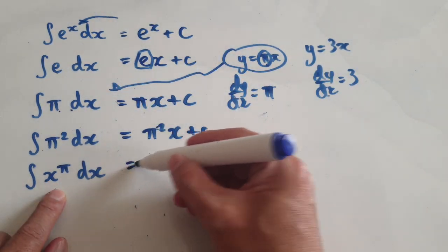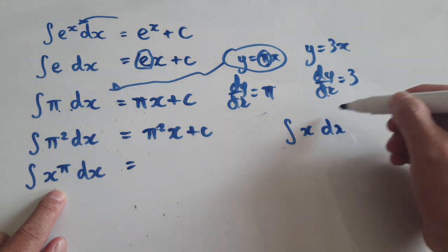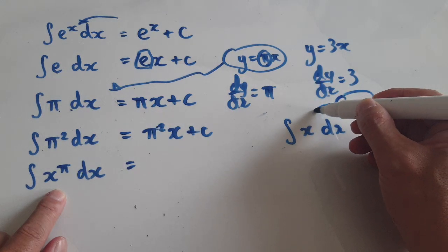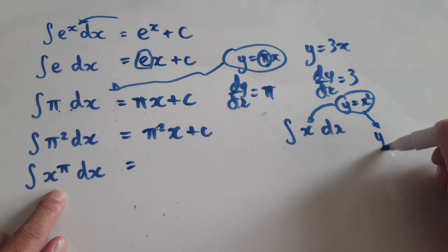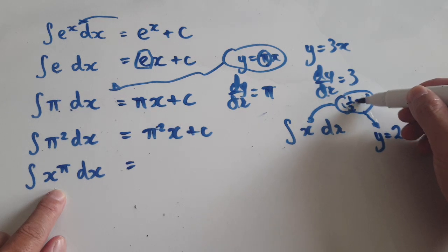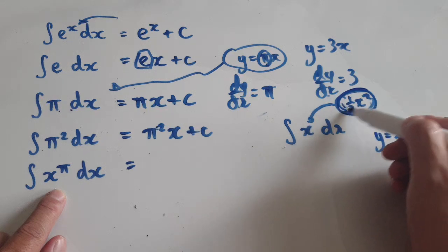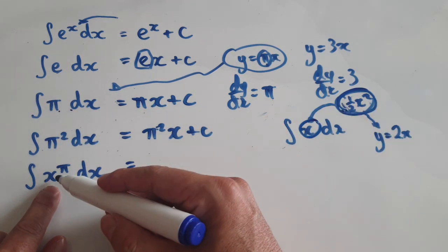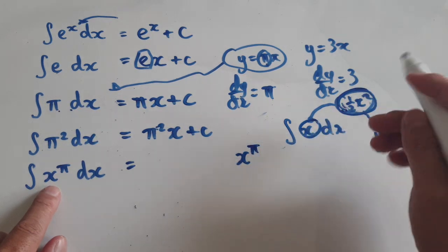Now when you integrate x dx, you're looking for something such that when you differentiate it, it gives you x. You would consider x squared as an initial guess, but when you differentiate that it gives 2x — you don't want the 2 — so you go back and stick a half in there: half x squared. I'm expecting you to know how to integrate this. But notice that x to the power of pi is just x to the power of a constant, like x squared or x to the power of 3 or 4.